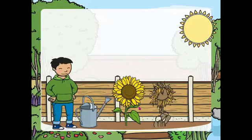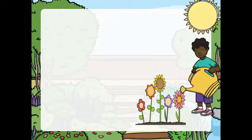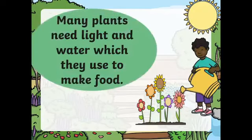Many plants need light from the sun. Now look at this — number four, we have air. Fresh air. Many plants need light and water, which they use to make food.